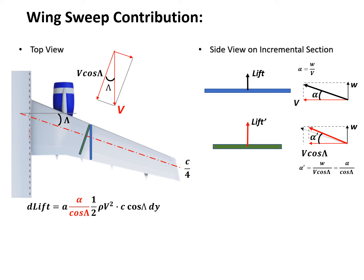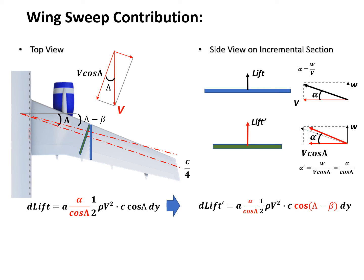So far we haven't used information about the sideslip. If we now assume a positive sideslip — meaning the aircraft turns towards the left — the connection of the quarter chord moves slightly, and the effective sweep angle becomes (lambda minus beta). In that case, the effective chord becomes C·cos(lambda minus beta). So the incremental lift dL-prime under the effect of positive sideslip is: a·[alpha/cos(lambda)]·(half·rho·V²)·C·cos(lambda minus beta)·dy, and the lift is pointing out of the screen.